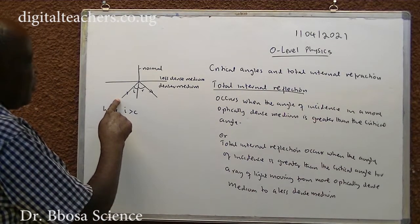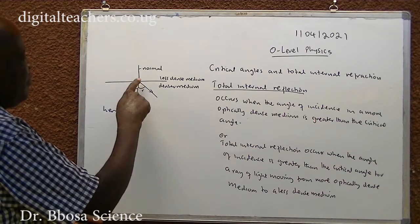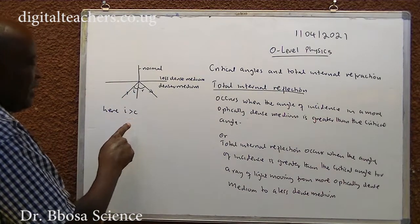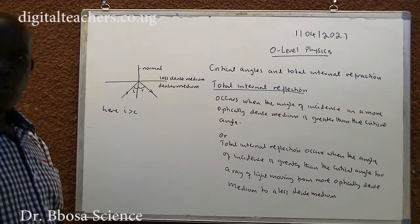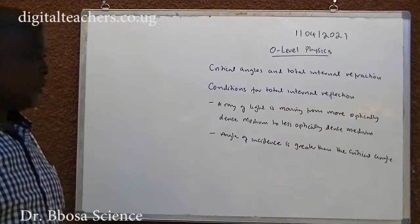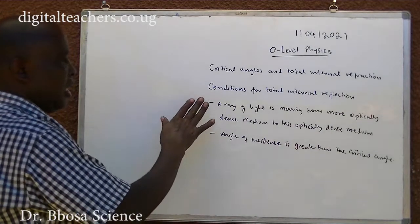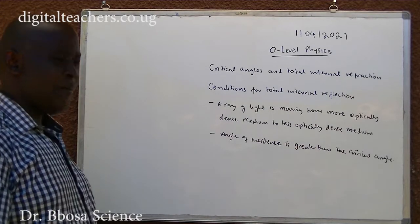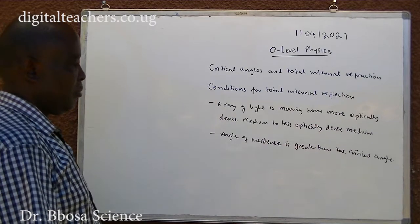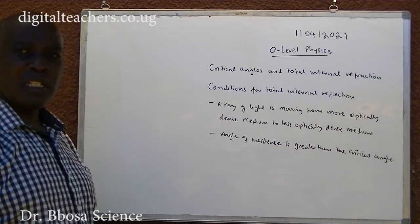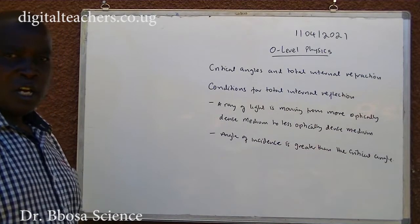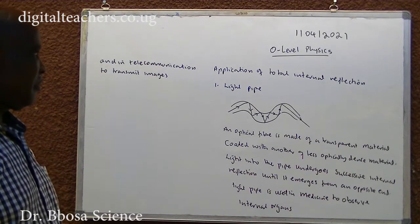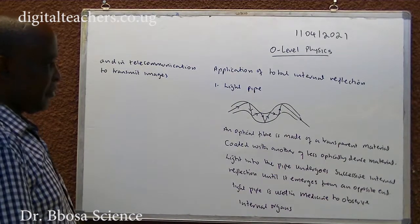The conditions are: light is moving from a denser medium to a less dense medium, and the angle of incidence must be greater than the critical angle.